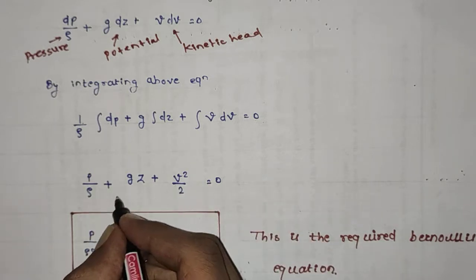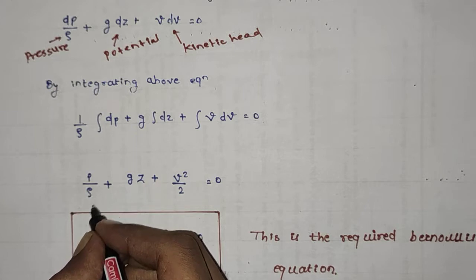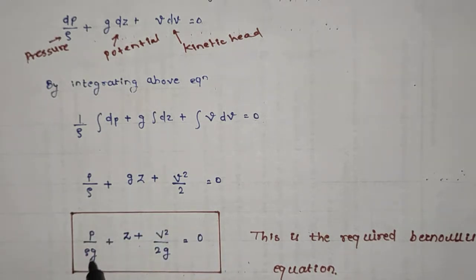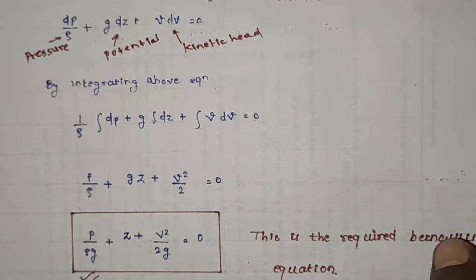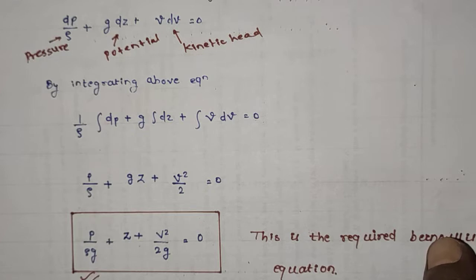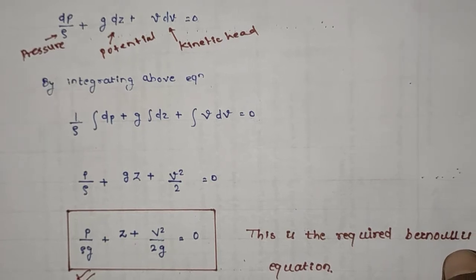After dividing the above equation by g we get: p/(ρg) + z + v²/(2g) = constant. This is the most important equation in fluid mechanics and is mostly used for solving various kinds of problems. Questions frequently relate to pipe flow and may ask which conditions are satisfied by Bernoulli's equation — so you need to remember those conditions.